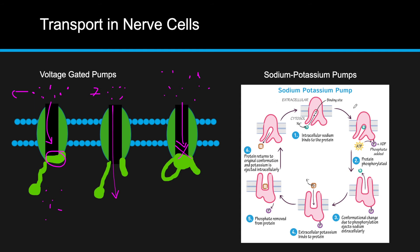There are also sodium-potassium pumps, which represent active transport in the nerve cell. The pump moves ions against the concentration gradient: sodium enters the pump, ATP is used, sodium exits the cell, and then potassium comes in. The phosphate unbinds, allowing potassium to enter the cell. This restores the concentration gradients to a potential that allows the cell to function. For every three sodiums pumped out, two potassiums enter.